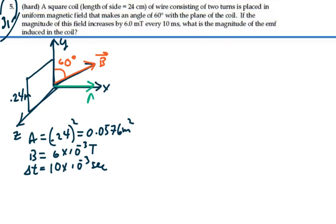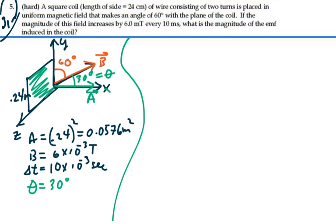because the area vector is always normal to the area it represents, and so that's coming straight out along the X direction. So the angle between the magnetic field and that is 30 degrees. So that's the theta that we're interested in here. Theta is the angle between the two vectors, and that is 30 degrees.